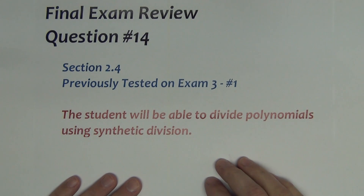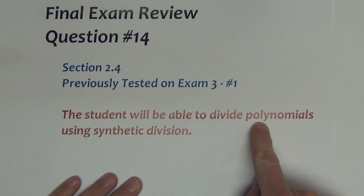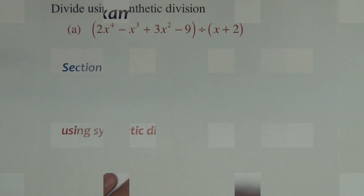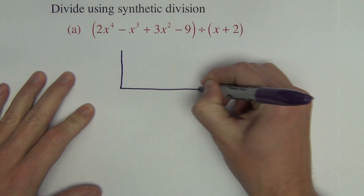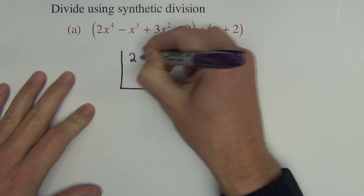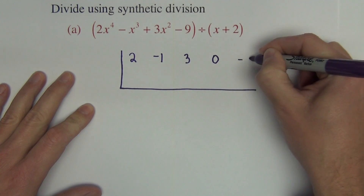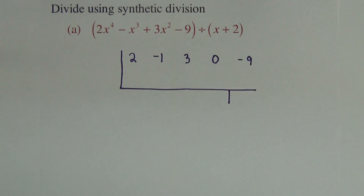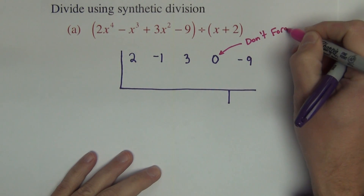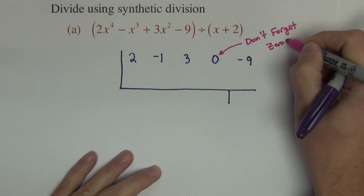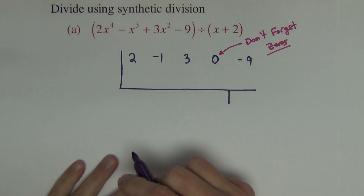Question 14 on the final exam comes from section 2.4, previously tested on exam 3, number 1. The student will be able to divide polynomials using synthetic division. To set up the problem, inside we have 2x to the fourth, negative 1x cubed, 3x squared, 0x, and negative 9. It's very important to not forget the zeros — there is a missing term of x in this problem, identified as zero.